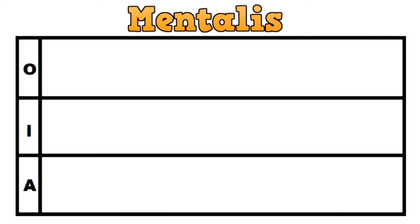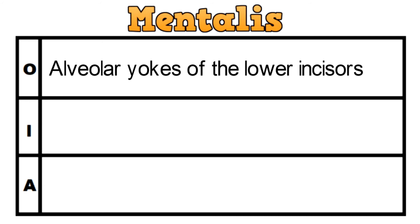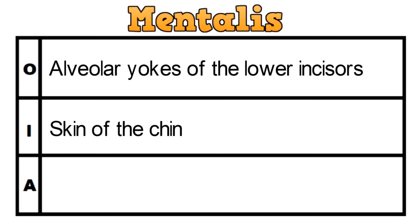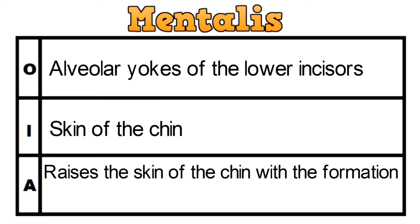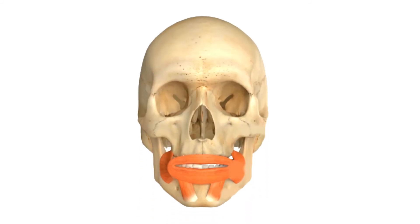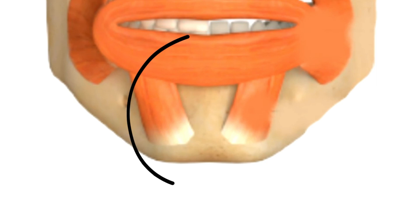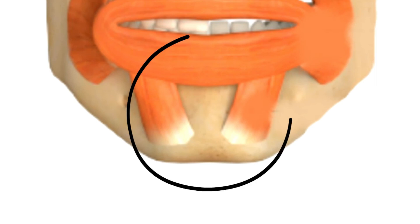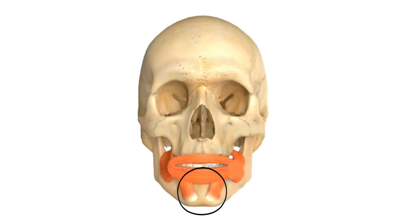The next muscle is called the mentalis. It originates from the alveolar yokes of the lower incisors and gets inserted into the skin of the chin. The action of the muscle is to raise the skin of the chin with formation of small dimples in it. These muscles you can see are the mentalis muscle.